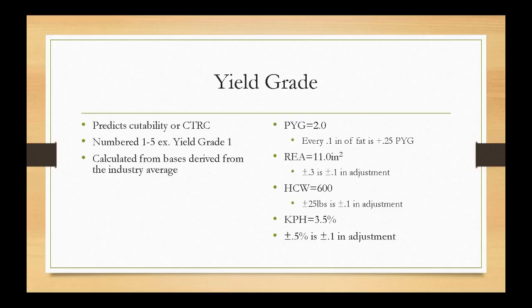There are numbers in between those increments — you just average out whichever is closer and go with the nearest adjustment. The same is true for the other side of 11 square inches; if it has a 10.7-inch ribeye, you're going to add 0.1. Hot carcass weight: the base is 600 pounds. For every 25 pounds over or under 600, we adjust plus or minus 0.1. A heavier carcass should have more muscle, so we add as it gets heavier. A carcass of 575 pounds would have an adjustment of minus 0.1; a carcass of 625 pounds would have an adjustment of plus 0.1.